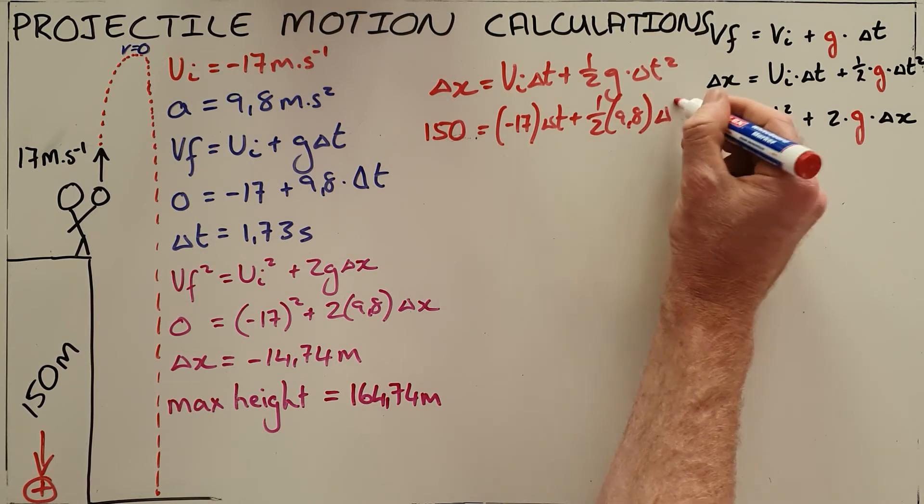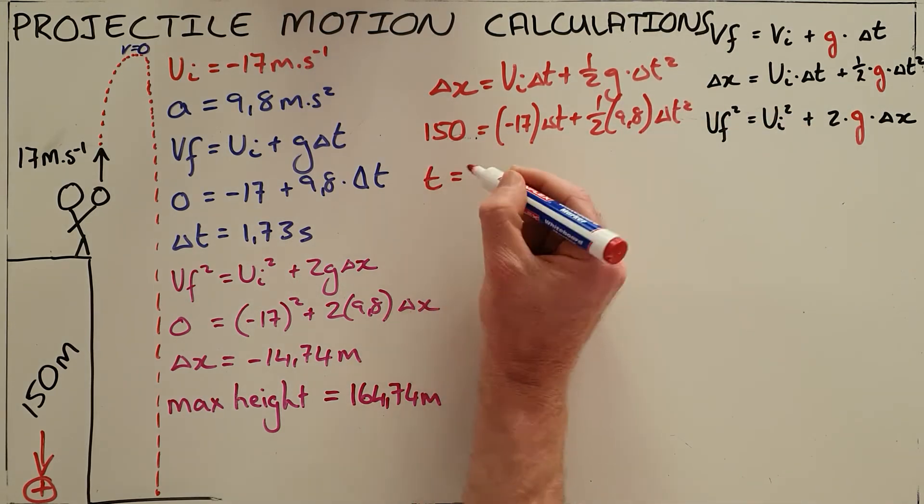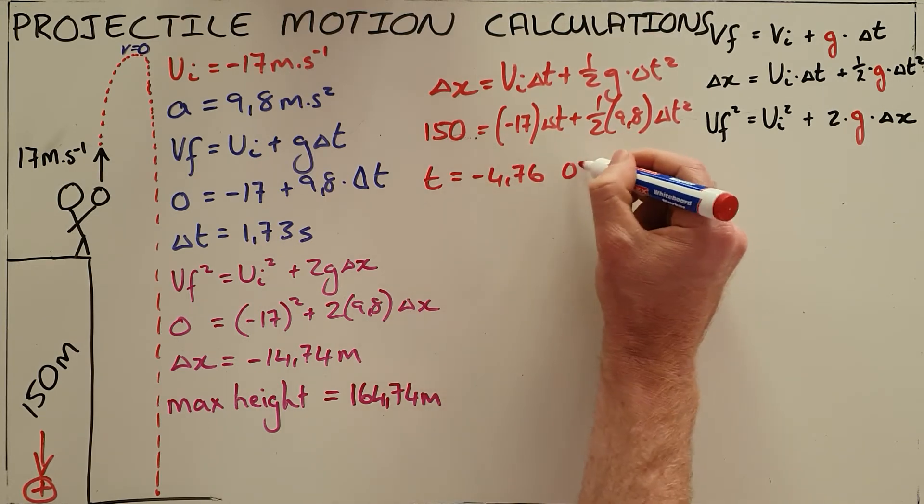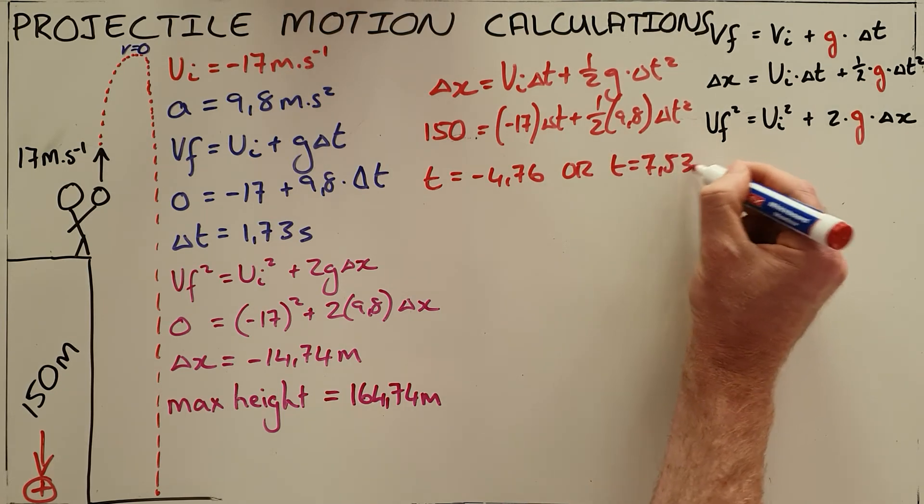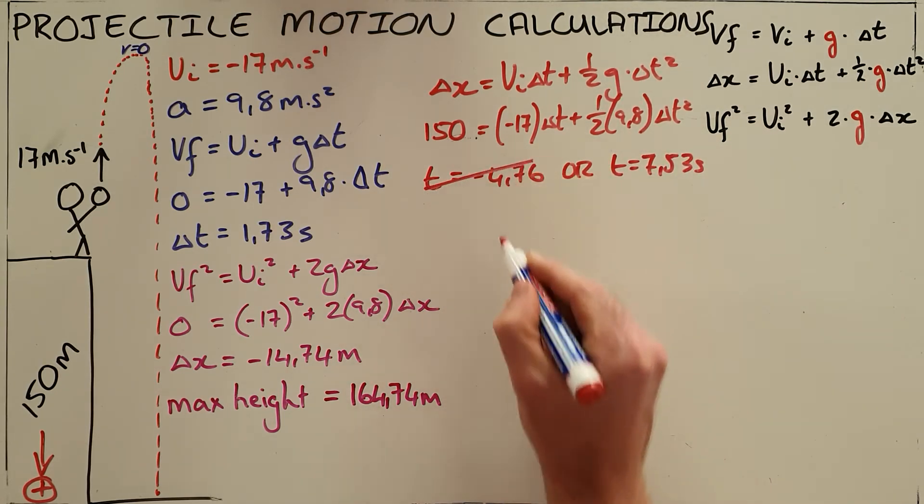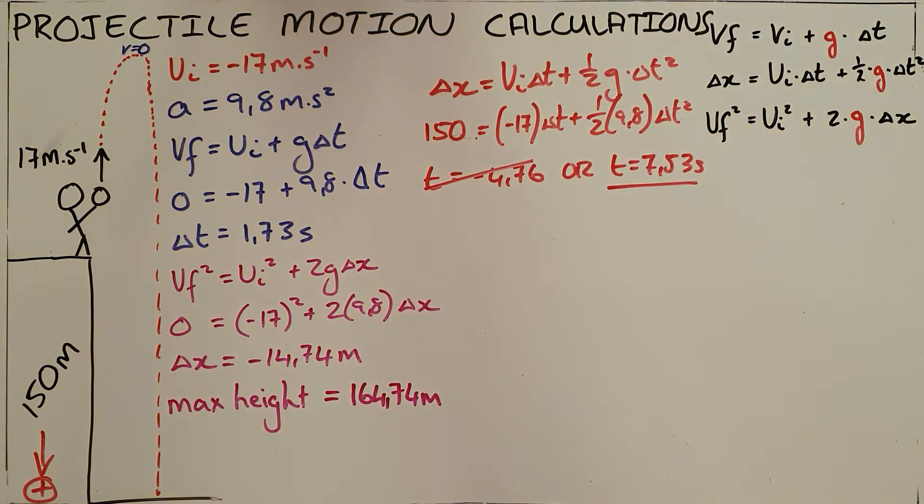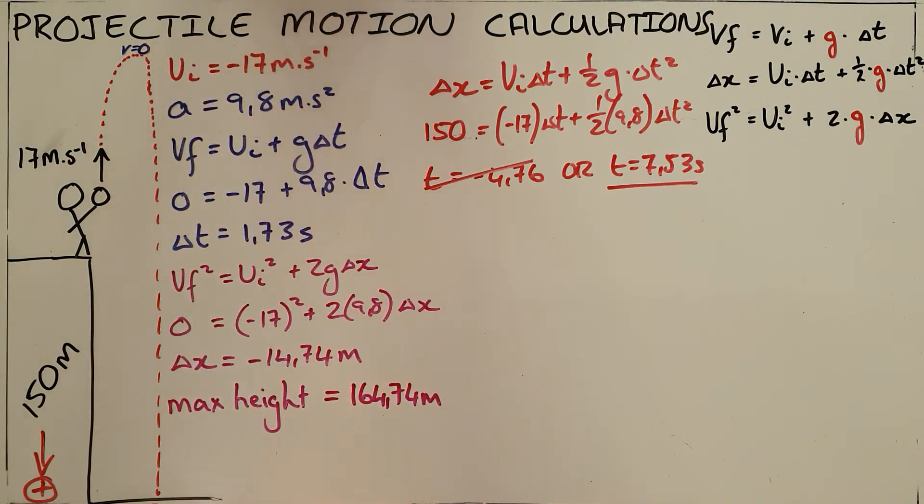We find that we have a quadratic equation that can be solved with the calculator to find that our time is either negative 4.76 seconds or 7.53 seconds. Obviously a negative time does not make sense here, so our time to hit the ground would be 7.53 seconds. That is the amount of time it took to go up, reach its maximum height, and travel all the way down to hit the ground.